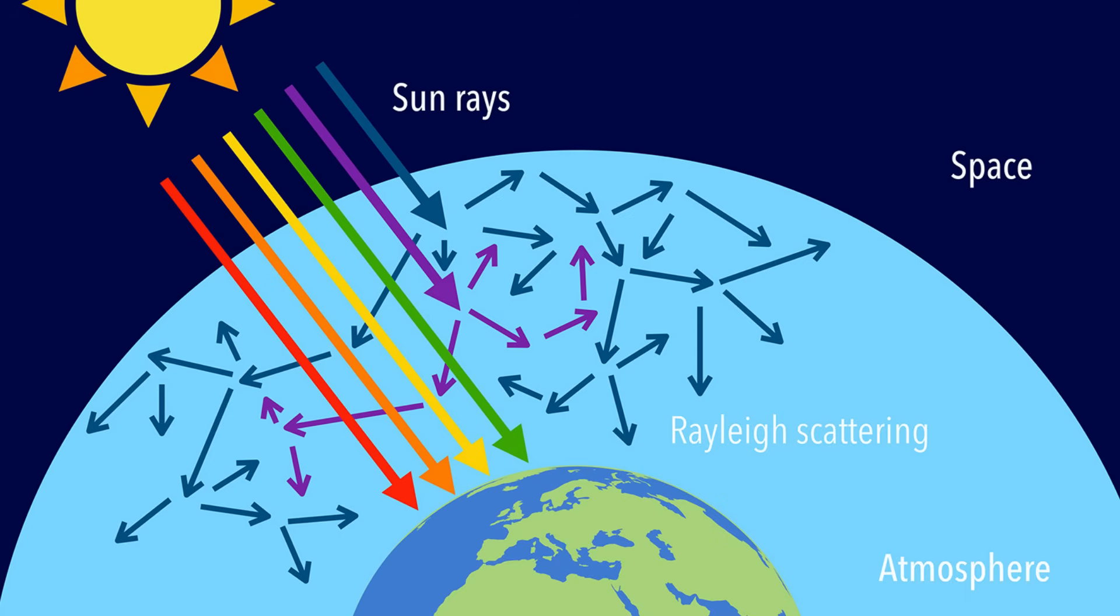When sunlight enters Earth's atmosphere, it collides with molecules and tiny particles. This scattering affects shorter wavelengths, like blue, more than longer wavelengths like red or orange. So blue light gets scattered in all directions, filling the sky with that familiar color.